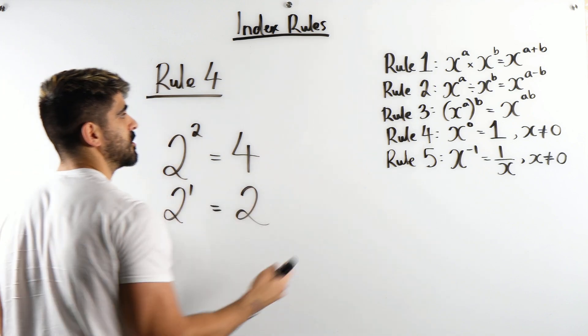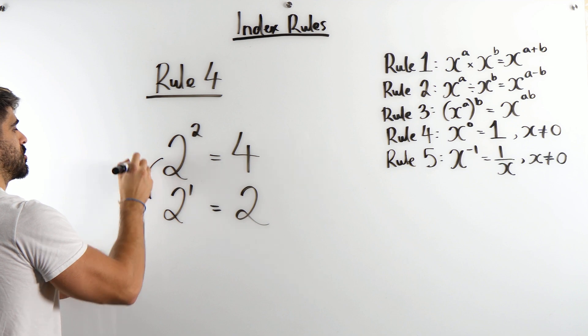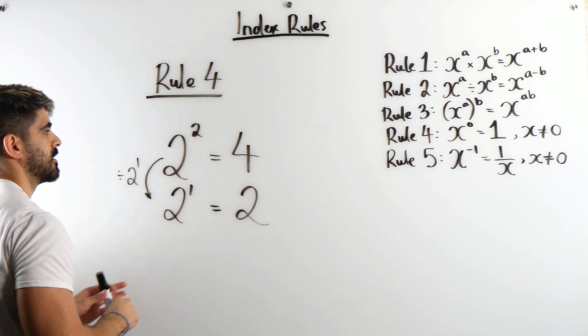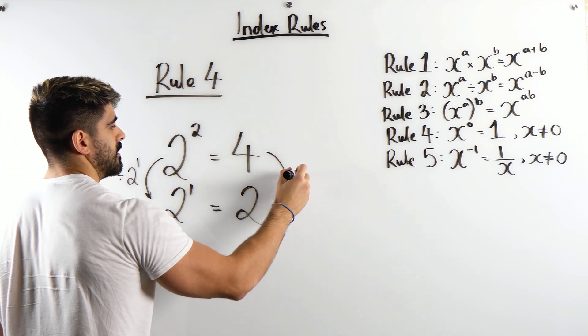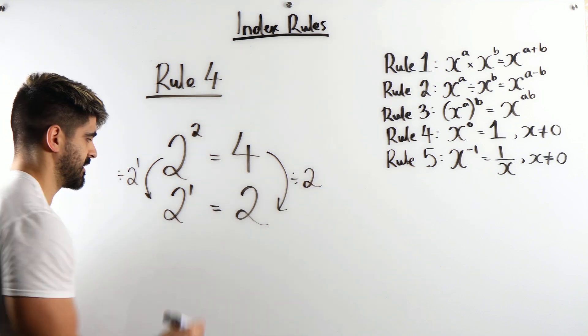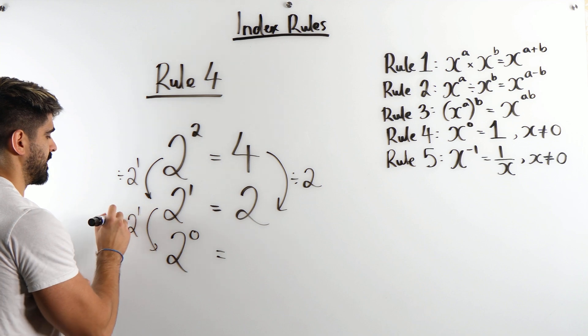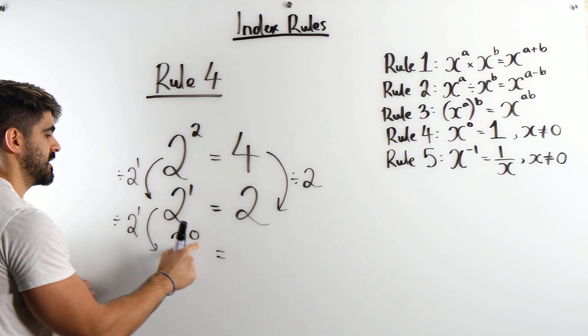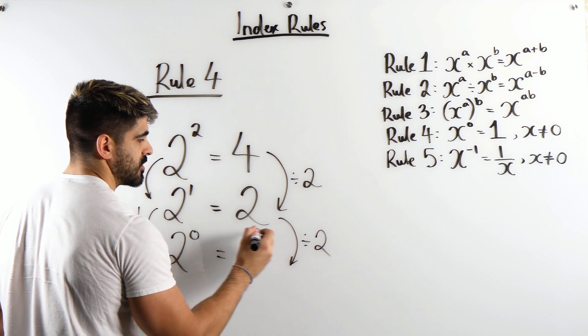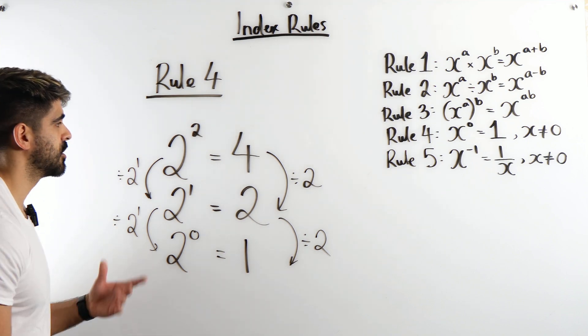How can I go from 2 squared to just 2 to the power of 1? Well using rule 2, we can do a division. I can divide by 2 to the power of 1 because then when you divide you're subtracting the powers. 2 minus 1 is 1. So I'm going to divide both sides by 2. How am I then going to get 2 to the power of 0? Well I'm going to divide by 2 again. Specifically 2 to the power of 1 because then 1 minus 1 is 0. And then when you divide by 2 here, 2 divided by 2 is 1.